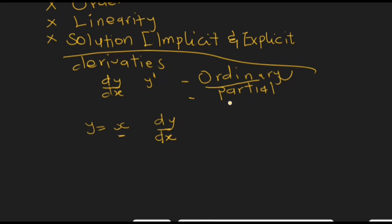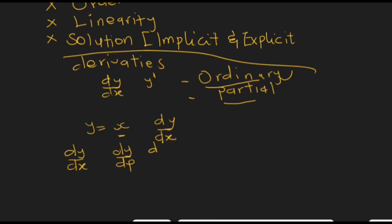In partial derivatives, that is where you can have one or two or three independent variables. In a partial differential equation you can have an equation containing ∂y/∂x, also ∂y/∂p, and that same equation can also have ∂y/∂q. So the number of independent variables in your equation is more than one — compared to the ordinary differential equation which had only x.